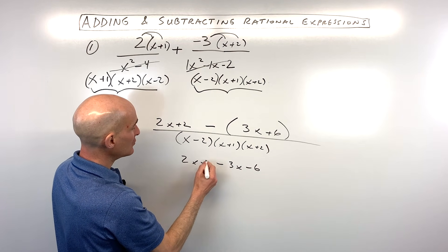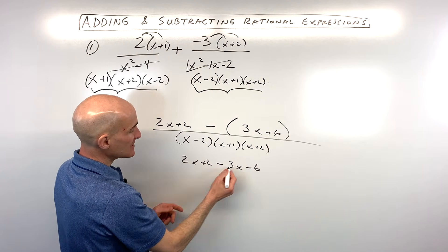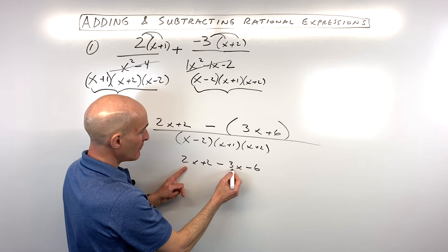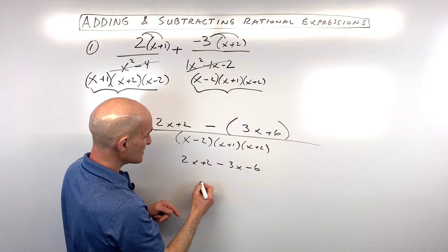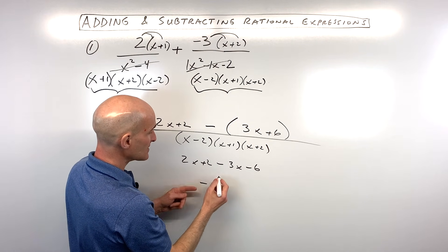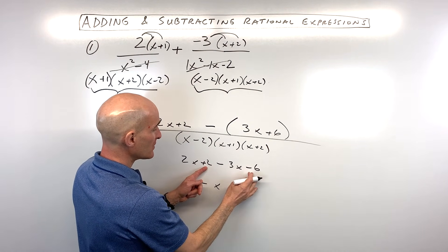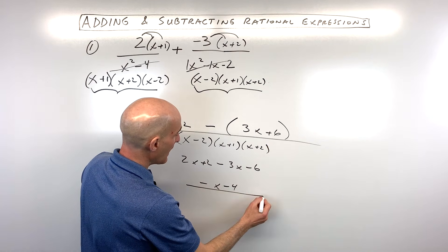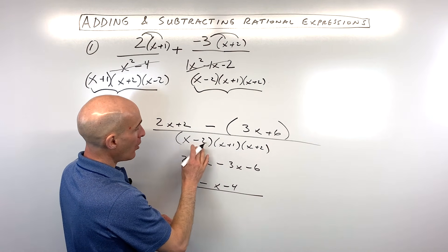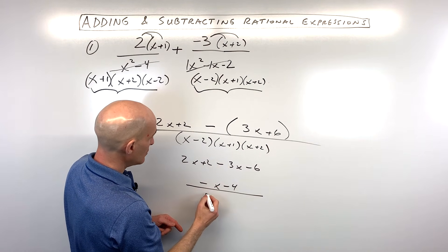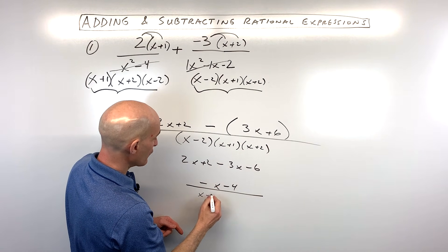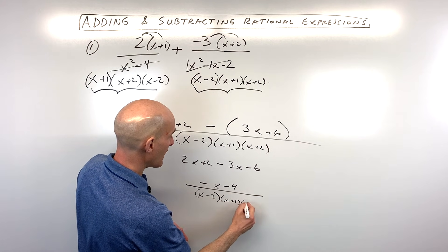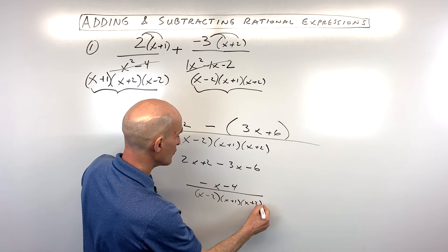Now all we have to do is combine like terms. 2x plus negative 3x is negative 1x. 2 plus negative 6 is negative 4. So the numerator is negative x minus 4, all over the common denominator x minus 2, x plus 1, x plus 2.